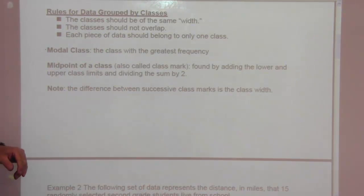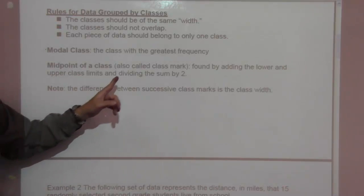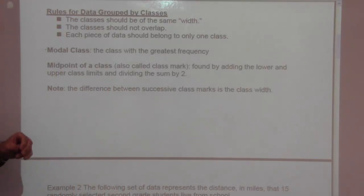Each piece of data should belong to only one class. Modal class, the class of the greatest frequency. Midpoint of a class, also called the class mark, is found by adding the lower and the upper class limits and dividing the sum by two. Note the difference between successive class marks is the class width.